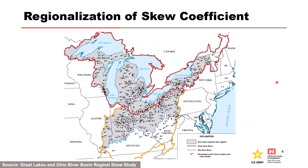This figure from the Great Lakes and Ohio River Basin Regional Skew Study shows stations in the region that were used to estimate the regional skew value. All the little dots near the Great Lakes and down into Ohio and Indiana were all pooled together to help inform a regional skew that you can apply to flow frequency analysis anywhere in the gray shaded area across multiple states.